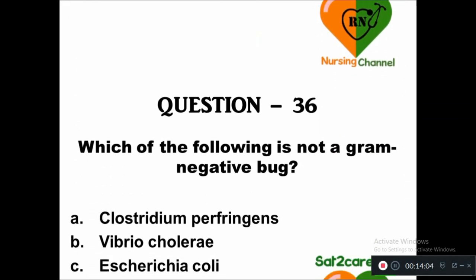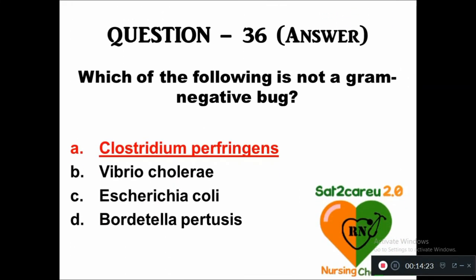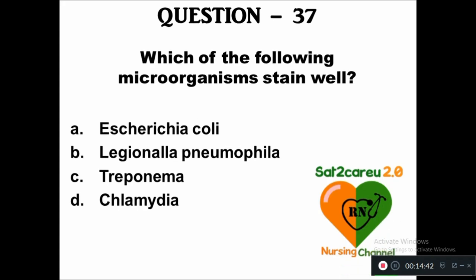Question 36: Which of the following is not a gram-negative bug — option A: Clostridium perfringens, B: Vibrio cholerae, C: Escherichia coli, D: Bordetella pertussis. The right answer is Clostridium perfringens — it is not a gram-negative bug. Question 37: Which of the following microorganisms stains well — option A: Escherichia coli, B: Legionella pneumophila, C: Treponema, D: Chlamydia. The right answer is Escherichia coli.